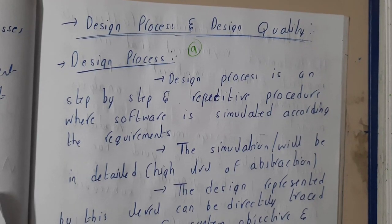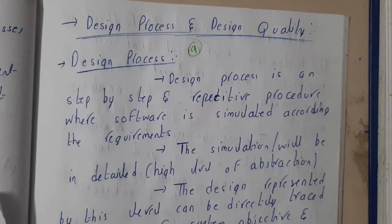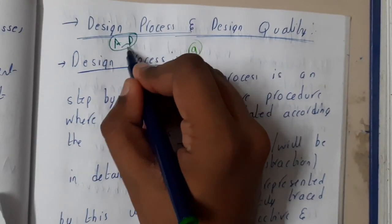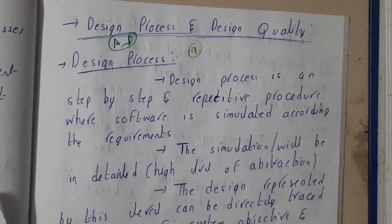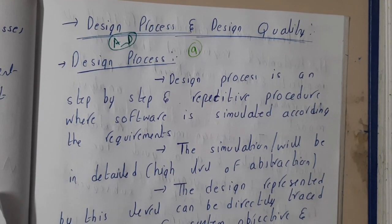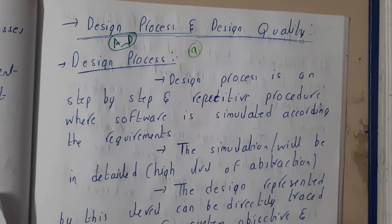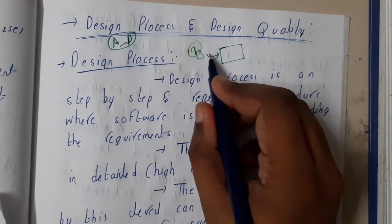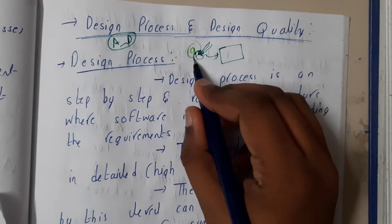Hello guys, we are back with our next lecture. In this lecture let us go through the design process. In our last lecture I introduced that we will be doing designing after analysis, so once analysis is done we will be moving on to designing. Basically you might be having a doubt about why designing again - in designing you will be doing an in-depth look at how the code should be structured, and you will be moving on to coding only after this process.